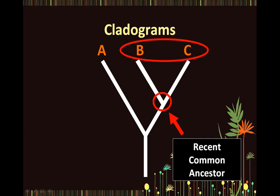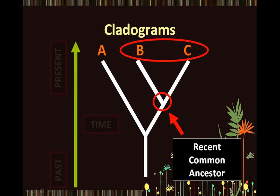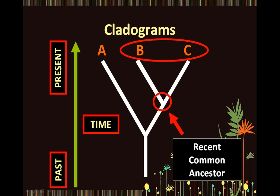Remember that the vertical axis of a cladogram represents the concept of time. Keeping this in mind, we see that B and C have speciated more recently, whereas species A branched off some time ago, which is why species B and C are more closely related to each other.